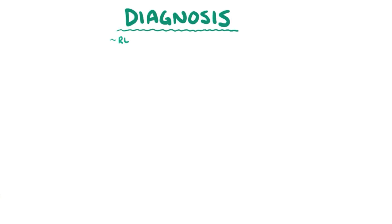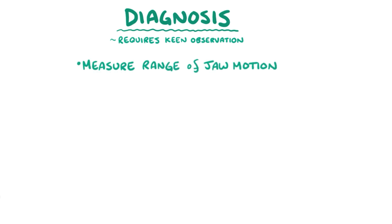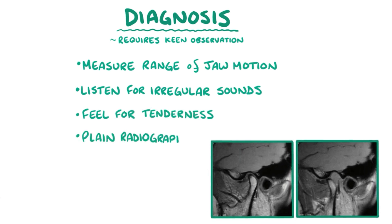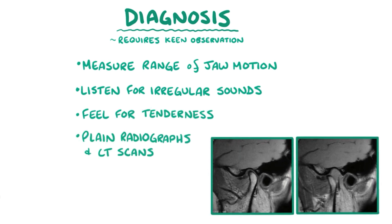Because of the various causes and types of temporomandibular disorders, a diagnosis requires keen observation, especially around factors that cause or worsen the problem. It's helpful to measure the range of jaw motion, listen for irregular sounds like clicking and popping, and feel for areas of tenderness. Plain radiographs and CT scans can show structural abnormalities or trauma, and MRIs can show changes in the articular disc and evidence of joint inflammation.